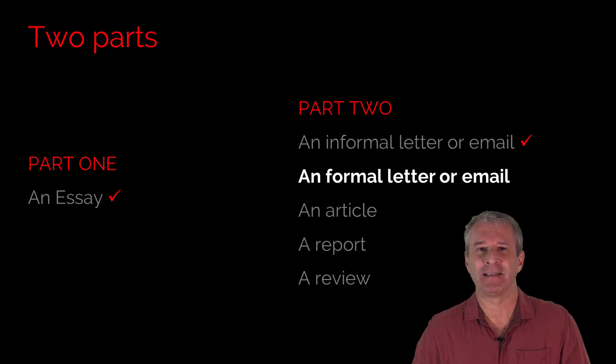Now back to the writing part of the exam. I'm sure you remember that you have 1 hour and 20 minutes for the writing in total — two parts. You have to answer two questions and each writing should be between 140 and 190 words. Well done if you remembered all of that. But do you remember the compulsory task in part 1? And what are the different tasks in part 2? These are your choices in part 2, and of course part 1 is always an essay.